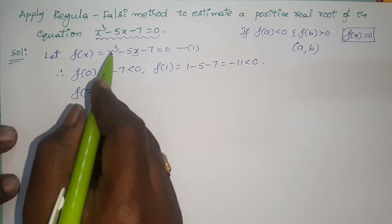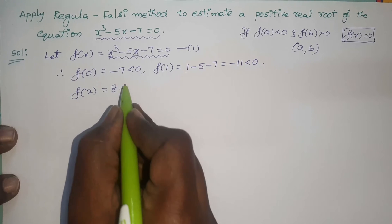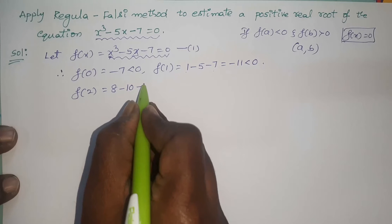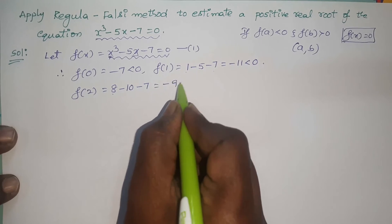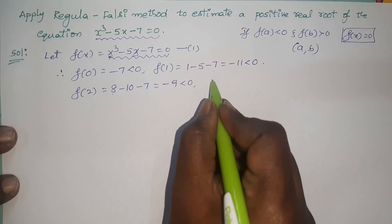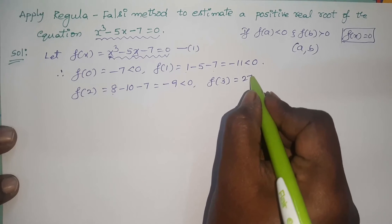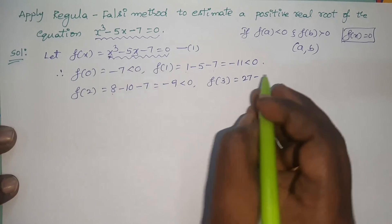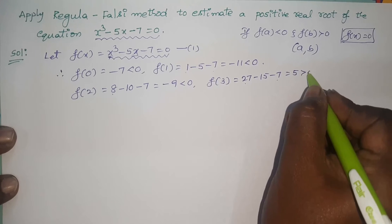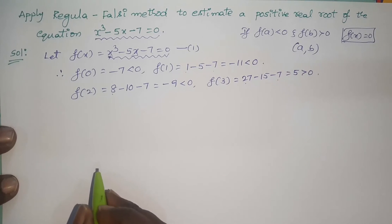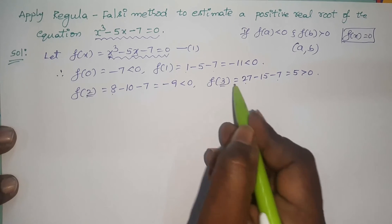Find f(2): replace x by 2, so 2³ = 8, 5×2 = 10, 8 - 10 - 7 = -9, which is negative. Find f(3): 3³ = 27, which gives a positive value. From these observations we conclude that the required root lies between 2 and 3 initially.